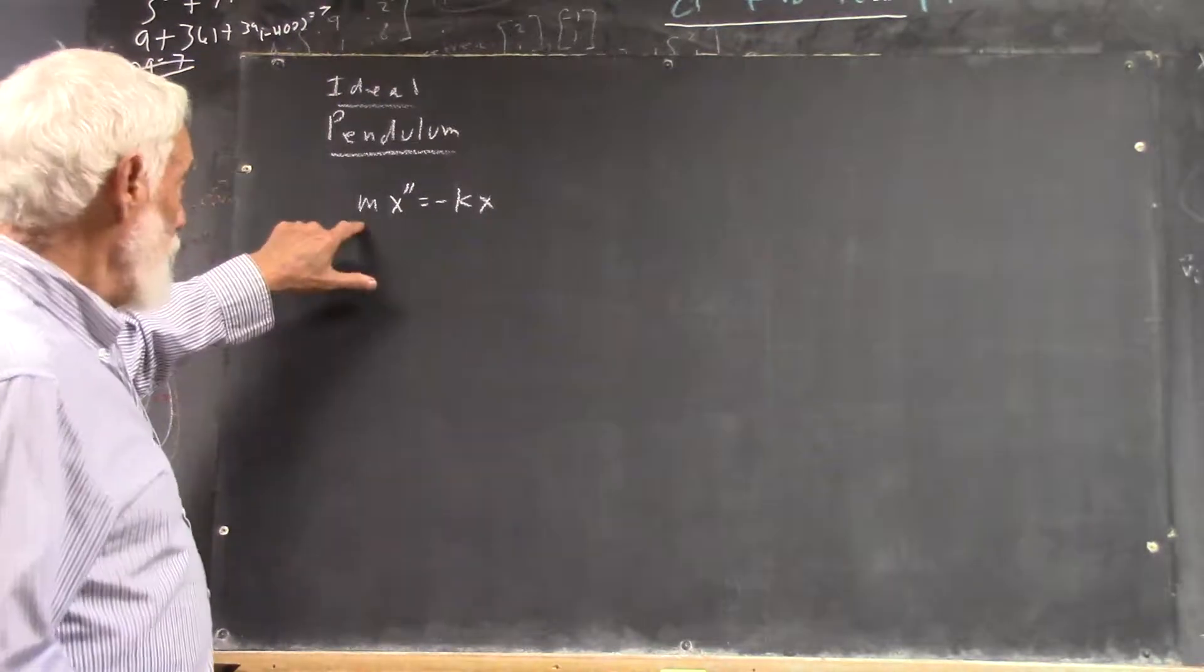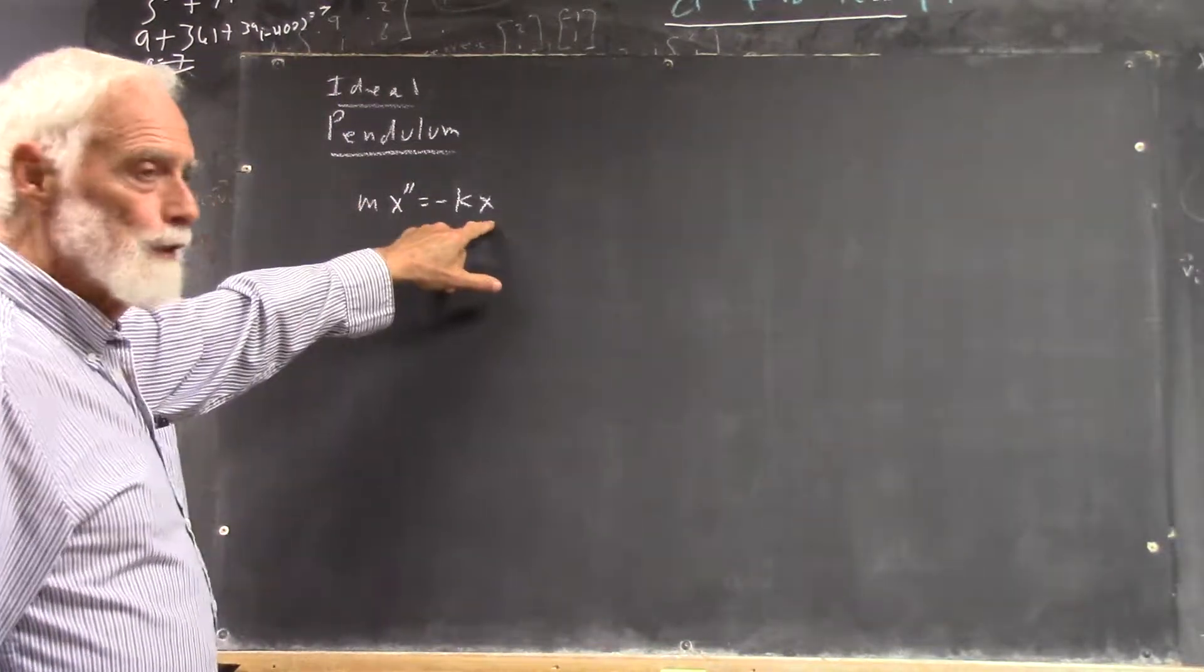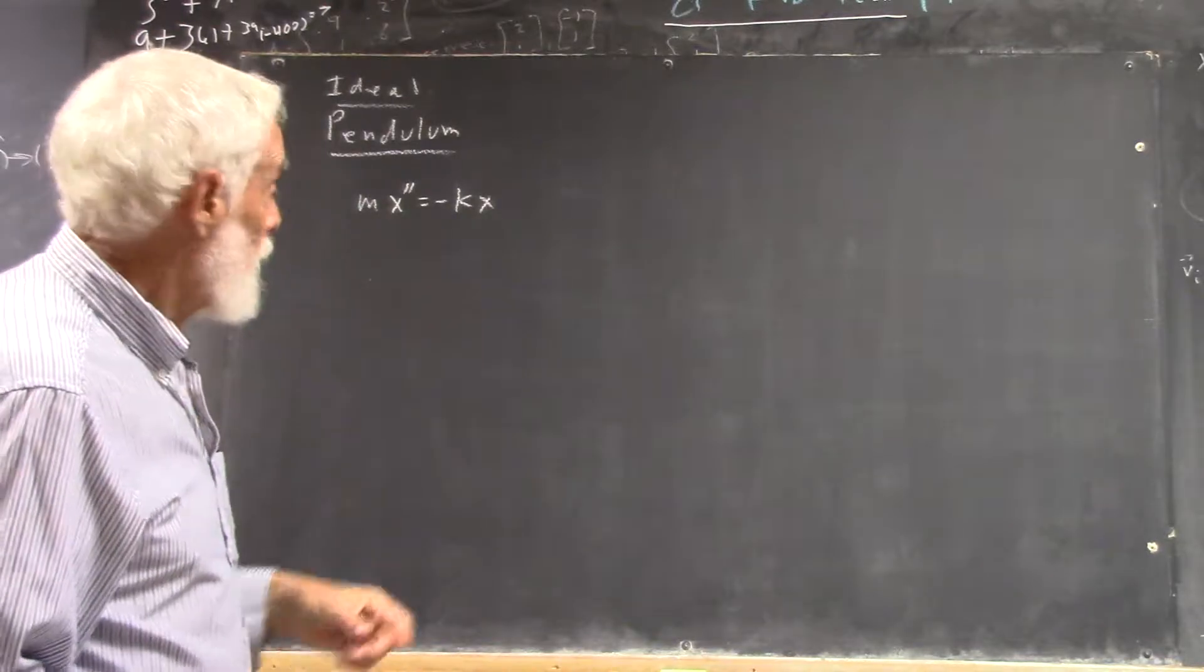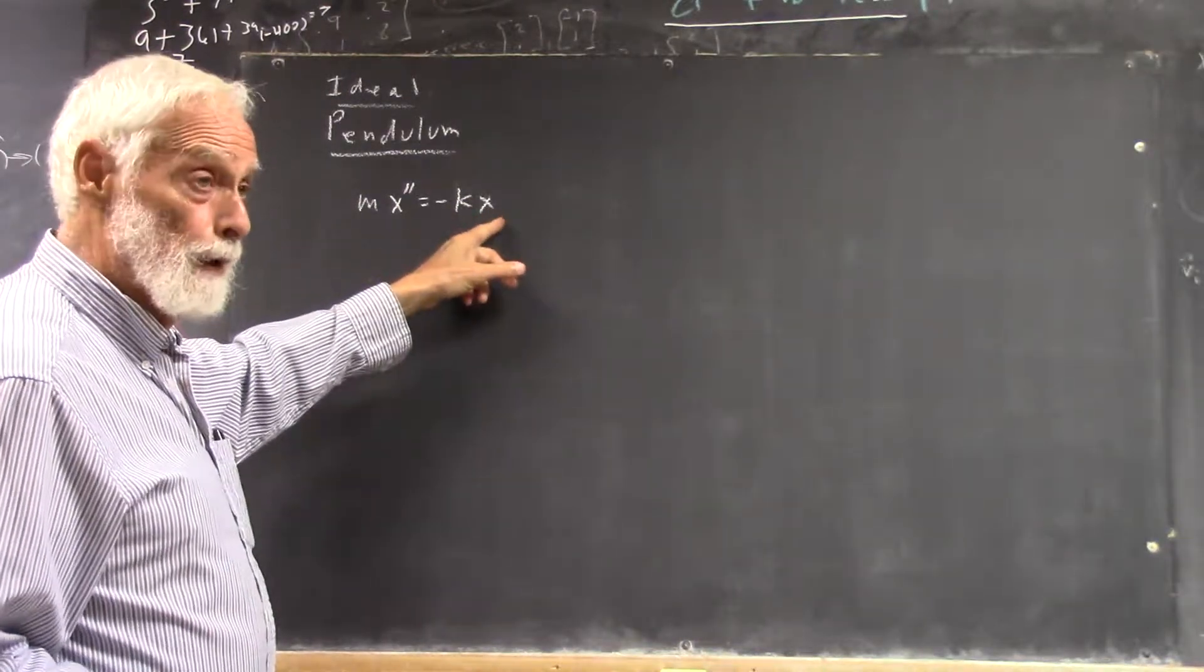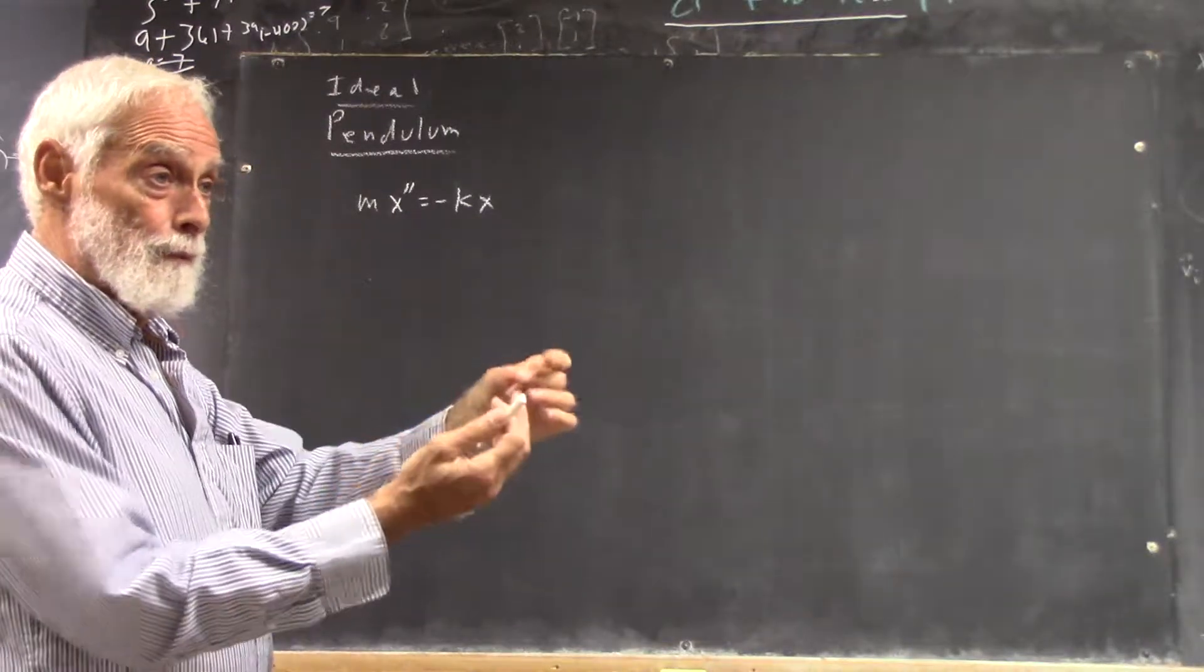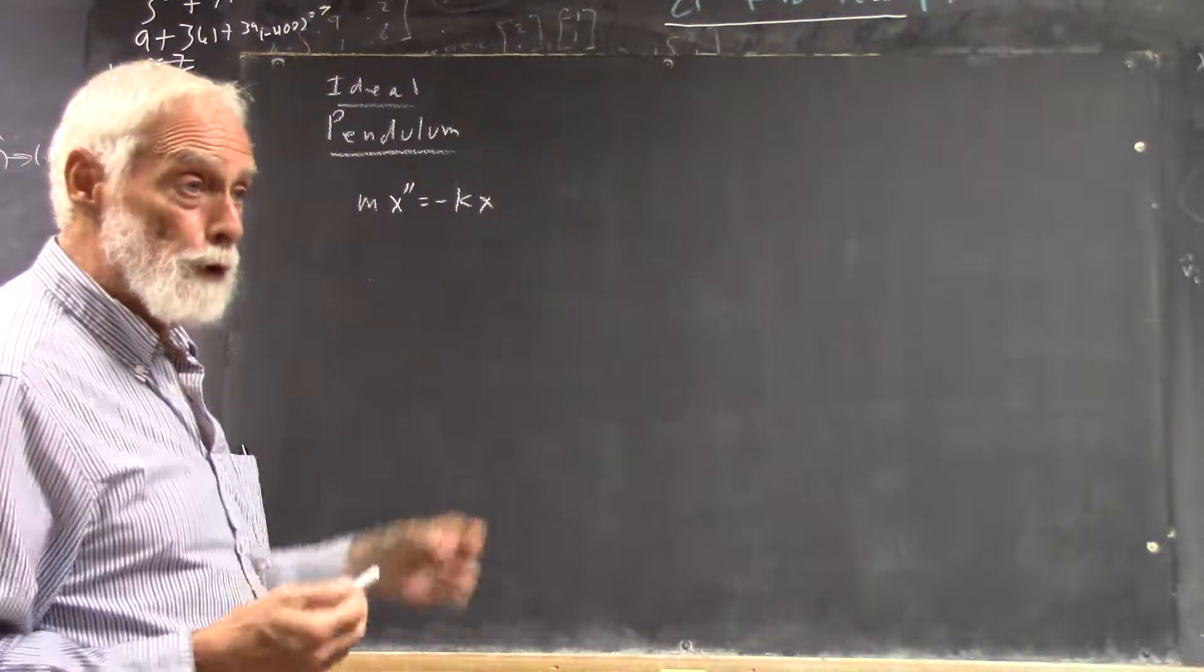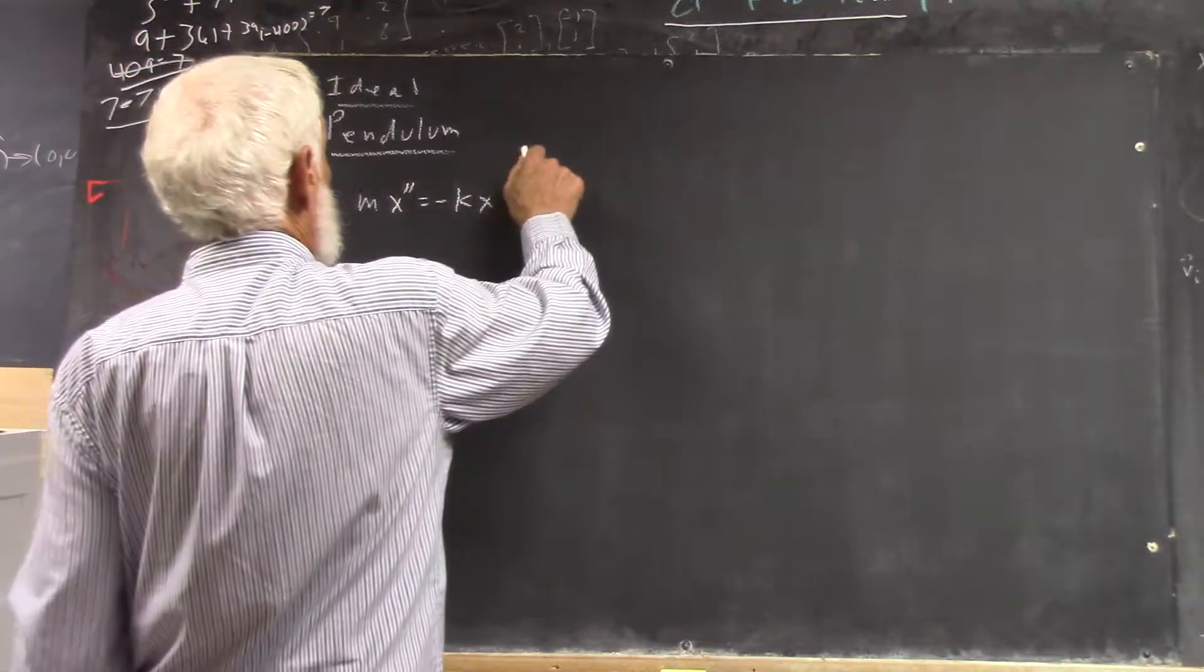M is the mass of the pendulum. X is how far it is pulled back, how far from the equilibrium position it is at any instant. And the further you pull it back, the more force you get. If there's some constant you multiply, but how far you pull it back, it tells you how much force you've got. You pull it back a little bit, you get a little bit of force. You pull it back twice as far, you get twice as much force.